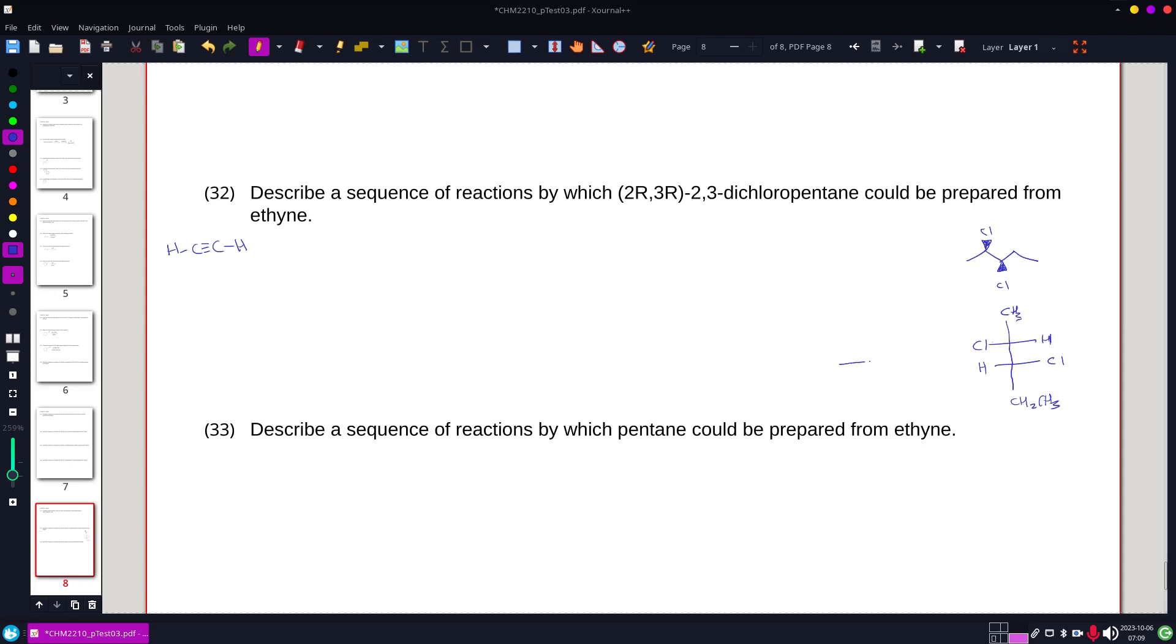From the Fischer diagram, a little bit easier to see, perhaps, that this is an anti-addition across a double bond, which is what chlorine does if I'd happen to start out with a double bond.